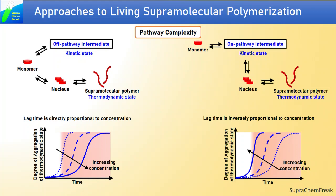If you do not understand these terms, please watch our previous video on energy landscape of supramolecular polymerization. These intermediates can be easily deduced from the kinetics of polymerization. If we increase concentration, there is higher formation of an off-pathway intermediate, hence it takes a longer time to convert into the thermodynamic state. Hence, in this case, lag phase has direct dependency on concentration. In case of an on-pathway intermediate, the increase in concentration pushes the system towards the thermodynamic state, and hence the lag phase is inversely proportional to concentration.